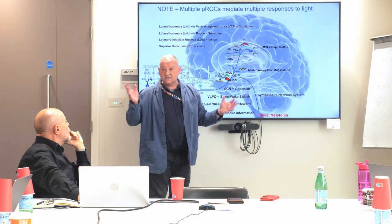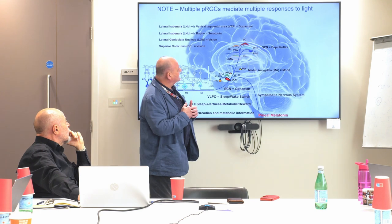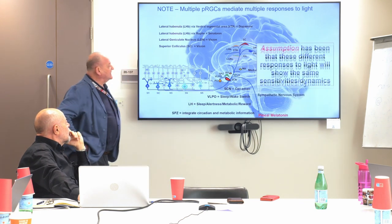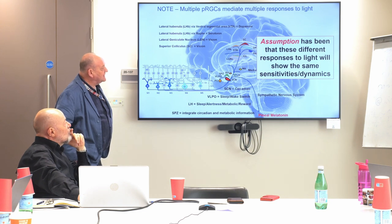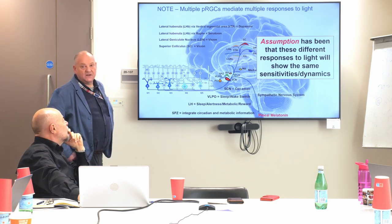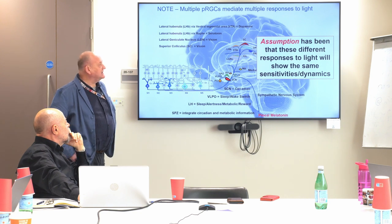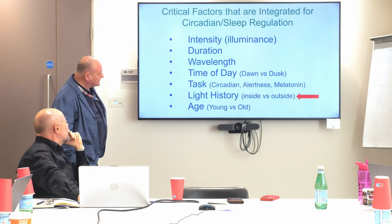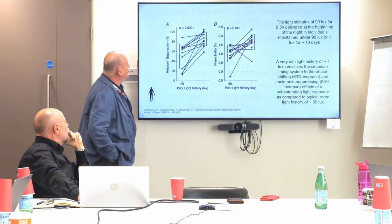Via the sympathetic nervous system you can regulate pineal melatonin and potentially many other structures. The pRGC system is broadly plugged in. But the assumption that these different responses to light all show the same sensitivity dynamics is flawed, as we'll unpack.